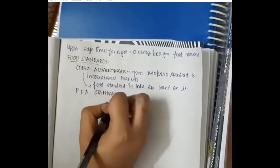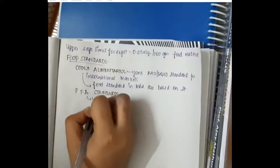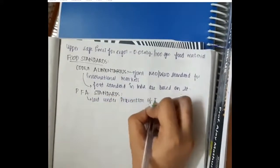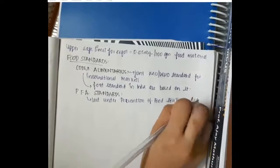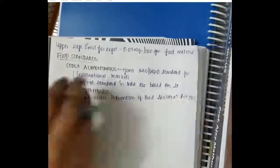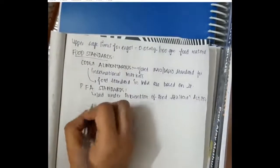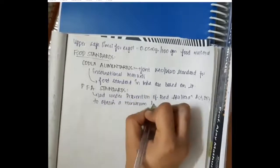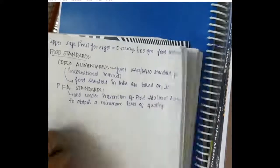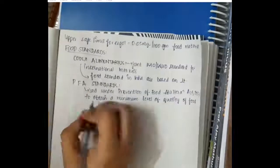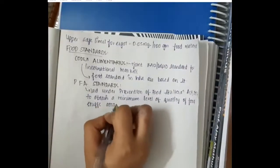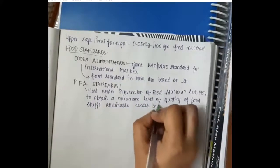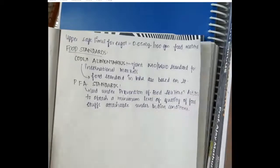We have PFA standards. PFA standards are laid under Prevention of Food Adulteration Act in 1954. We have Prevention of Food Adulteration Act. This has some standards which aim to obtain a minimum level of quality of foodstuffs attainable under Indian conditions. Here minimum level of quality is ascertained.